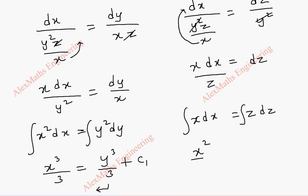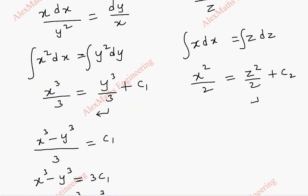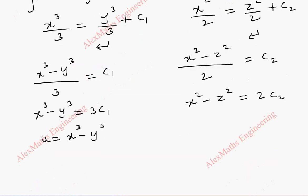This is x square by 2 equal to z square by 2 plus the constant c2. Carrying this to the other side and making as a common denominator. We get x square minus z square equal to c2. And, thus, we get x square minus z square is equal to 2 c2. And, this is taken as v which is x square minus z square.